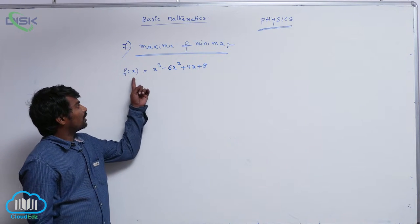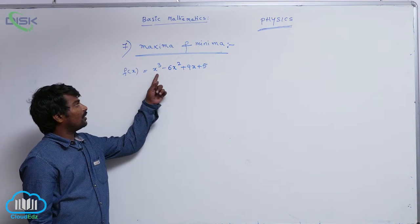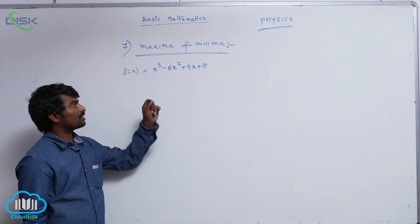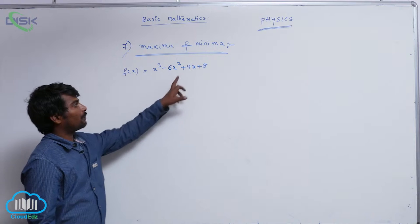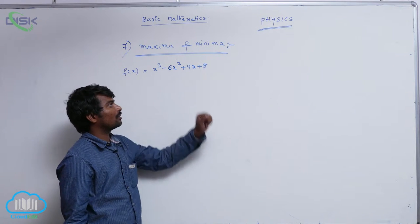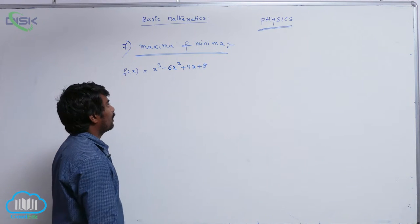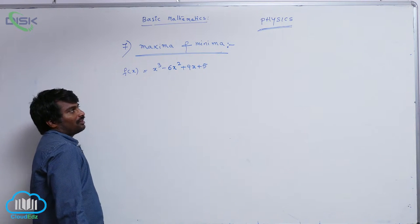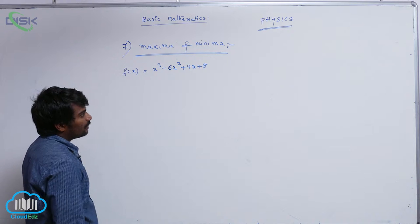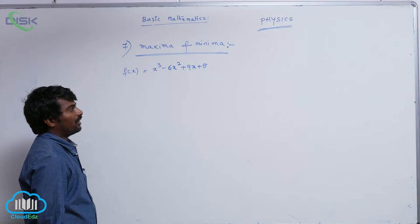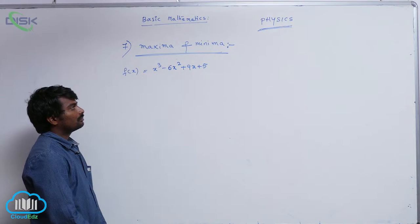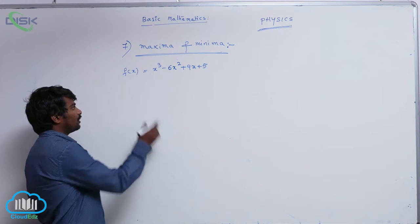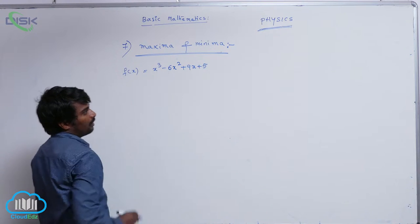Let us solve one problem. f of x is equal to x cube minus 6x square plus 9x plus 5. Whether the function attains maxima or minimum value, its differentiation must equal to 0, that is what we have seen.